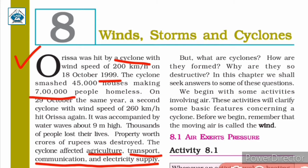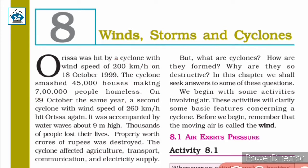The numbers of people who lost their lives and the numbers who lost their property are very high. What are cyclones? Why do they happen? Why are they so destructive? In this chapter, we will discuss why cyclones are formed, how they are formed, and why they are so destructive.